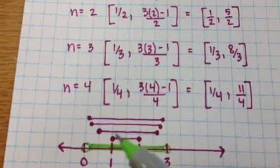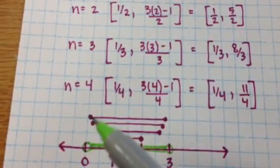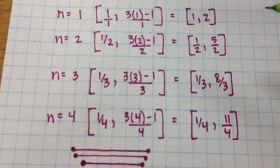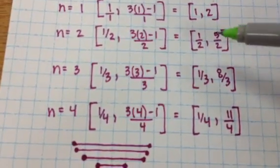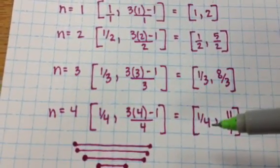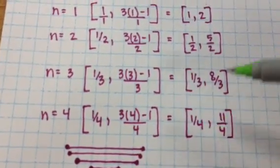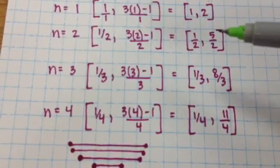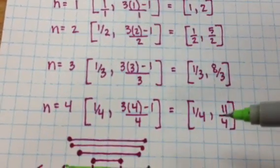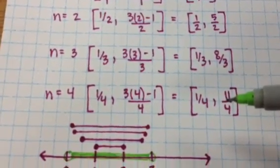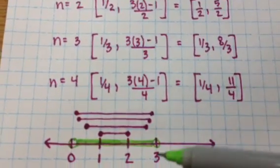And so my intervals are getting closer and closer and closer to zero on this side. Notice that these numbers 1, a half, a third, a fourth are all getting closer and closer to zero. And then on this side, I've got 2, 5 halves, 8 thirds, 11 fourths are also getting closer and closer to a number, but they're getting closer and closer to 3.